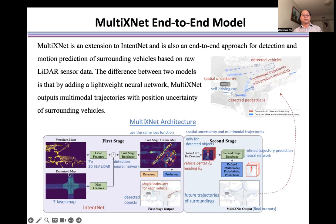IntentNet uses LiDAR sensor data and map as input to predict surrounding vehicles, including the center coordinates, dimensions, and heading angle. IntentNet also predicts a single trajectory for each detected vehicle.